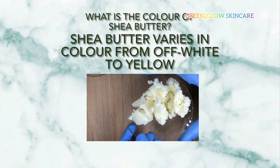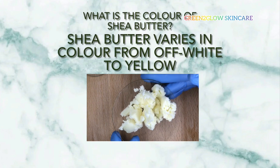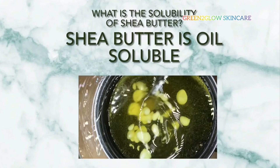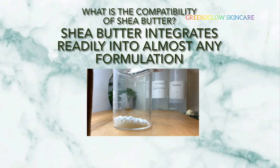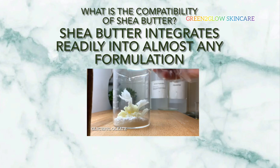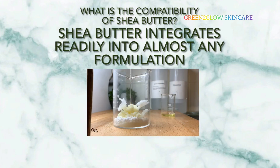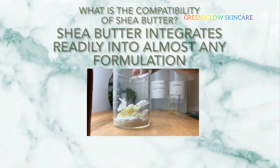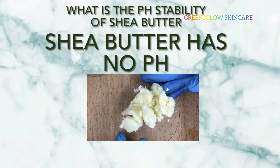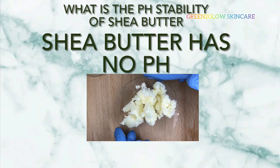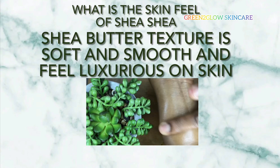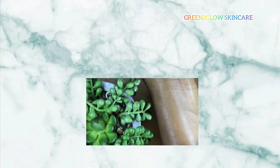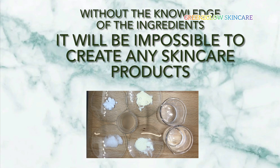What color does it have? What would the color affect in the end result of my formulations? What is the solubility — is it oil or water soluble? You need to find out if it's compatible with all the ingredients. When you add it to water or oil phase, since it's oil soluble, it has to go with the oil phase ingredients. Also consider the pH dependence and the skin feel — does it feel good on skin? All this you have to find out about your ingredients before you can use them in your formulations.